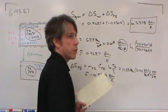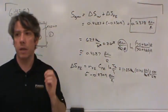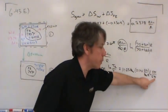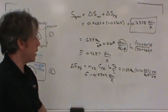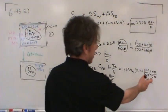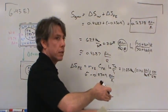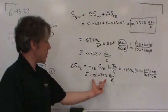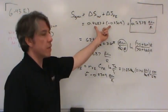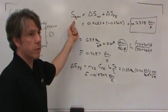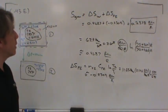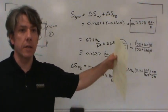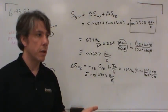The entropy generated is: S_gen = ΔS_W + ΔS_Fe = 0.4687 + (−0.2309) = 0.2378 BTU/R. This positive value confirms entropy was generated, not just transferred. It is a measure of the irreversibility of the process — the farther apart the initial temperatures of the iron and water, the greater the temperature difference, the more entropy generated, and the more irreversible the process.